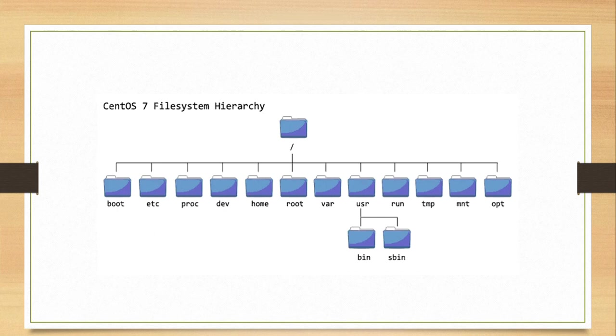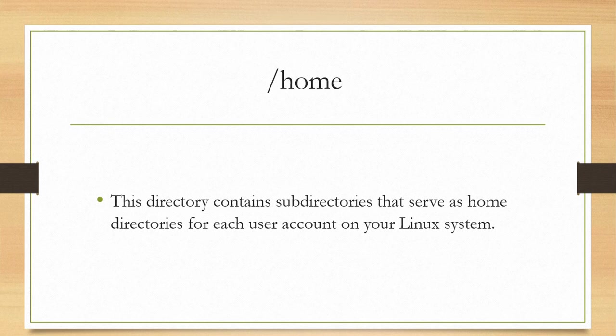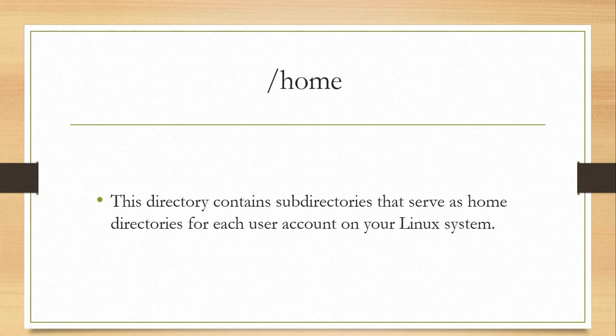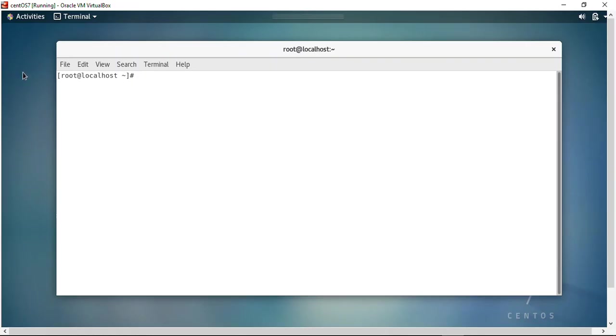Let's start with the home directory. This directory contains the data of all the users you currently have on this OS. Generally in every operating system we can have multiple users. In Windows we used to have users, and in Linux every user that is created on the operating system gets a directory created for them inside the home directory. The home directory contains subdirectories — one for each particular user that has been created on this OS. Let me move to my CentOS to show you this.